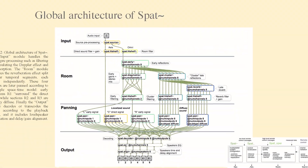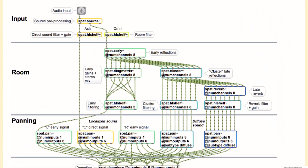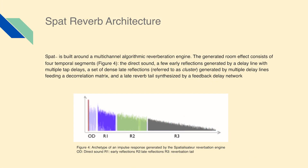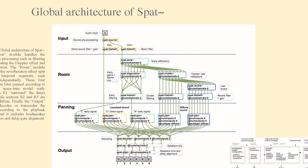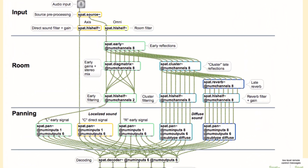The next module is the room module, which generates the reverberation effect. The reverberation is divided into four temporal segments and each segment is filtered independently. This allows for precise control and manipulation of the characteristics of the reverberation over time. The four sections of the reverberation are later panned according to a simple space-time model. The early reflections or R1 surround the direct sound, while sections R2 and R3 are spatially diffuse, creating a sense of spaciousness.